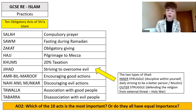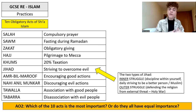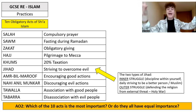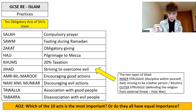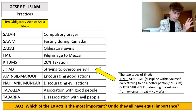We also have Jihad — striving to overcome evil — and there are two types we need to know. The inner struggle: overcoming evil within yourself, the daily discipline to be a better person against your own selfish desires. And then the outer struggle: striving to overcome evil in the outside world, defending the religion from external threats, which gives us the link to Theme D on holy war. Consider: is it more important to focus on the inner or outer struggle as a modern Muslim?